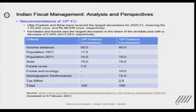In case of the 15th Finance Commission, what is more important to note is the criteria used and the weights given for different indicators, with the sum being 100. The 14th Finance Commission gave weight to income distance — what is the national average and how much states are deviating — based on per capita income. Then population of 1971 and population of 2001 were also used. The weight for population 1971 is now 0 as per the 15th Finance Commission, whereas the 14th Finance Commission had given it a weight of 17.5 percent.